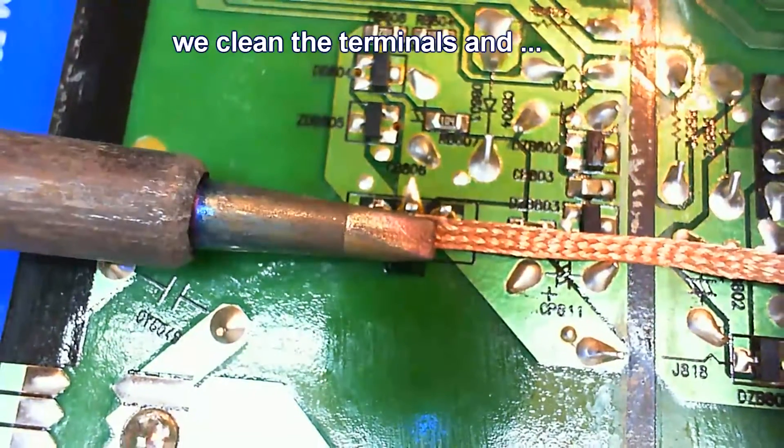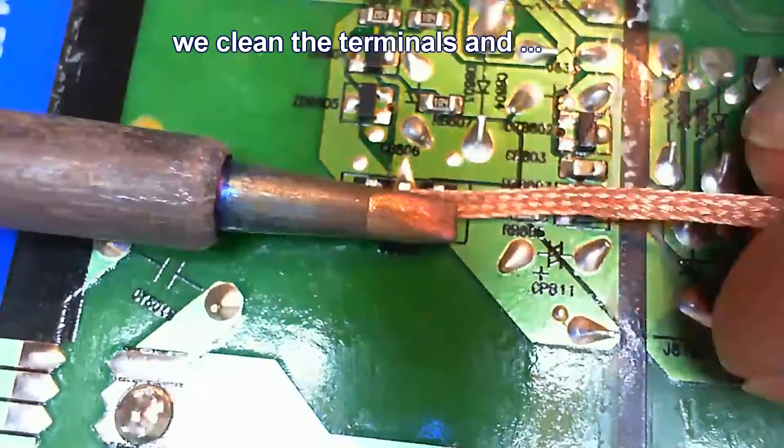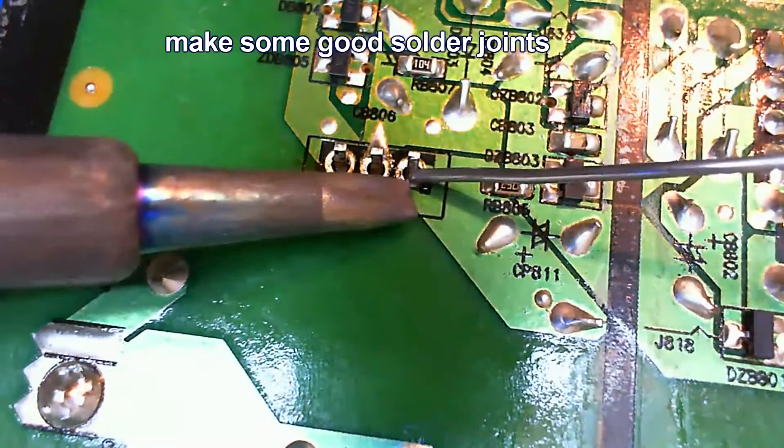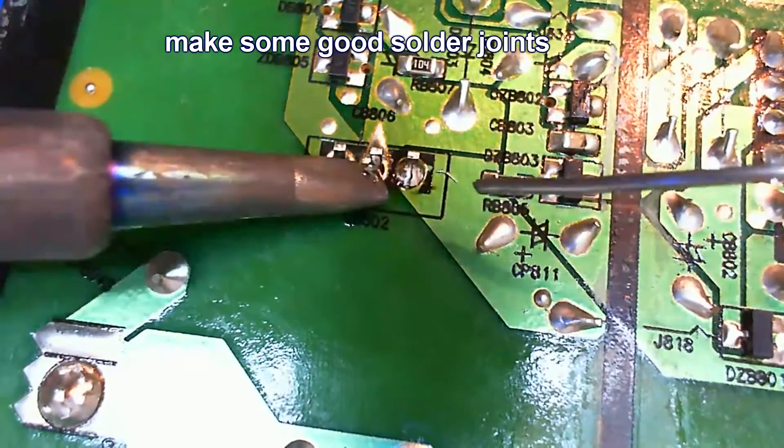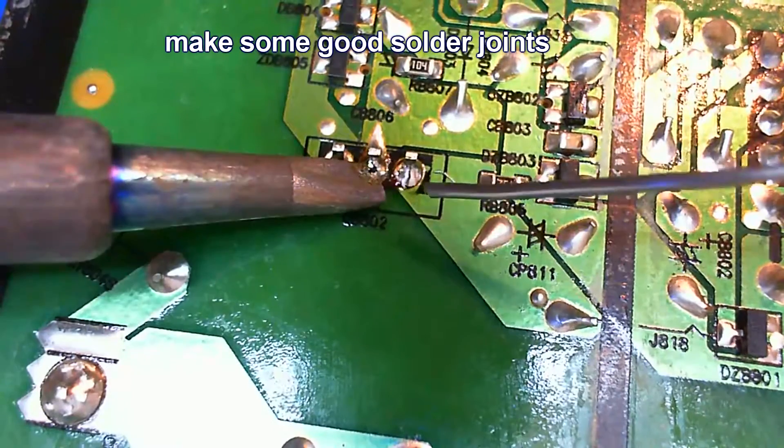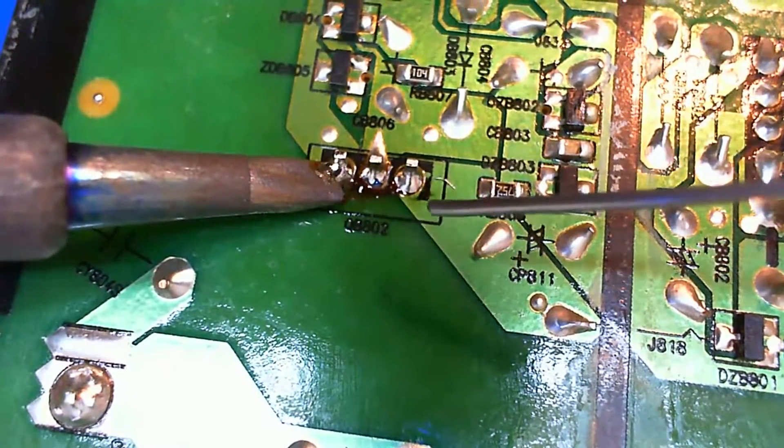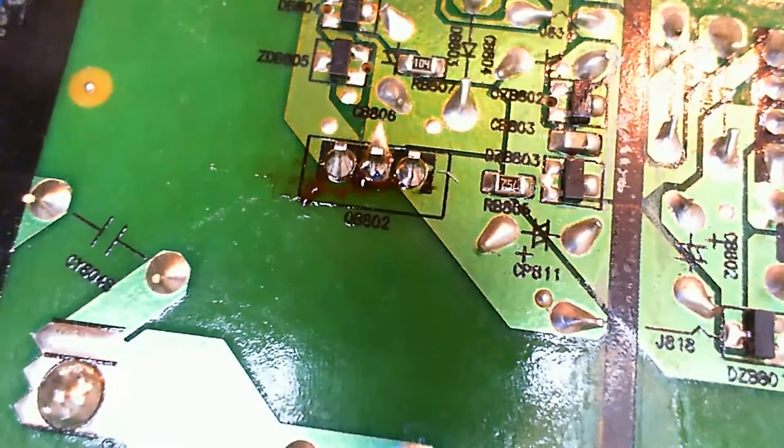If this transistor has bad solder joints, it will not allow the PFC circuit and the 24V circuit to turn on. So here it's pretty obvious the solder joint is cracked. We just clean them, we clean all three of them and then re-solder the terminals.